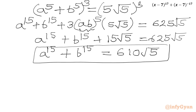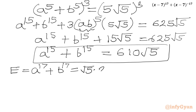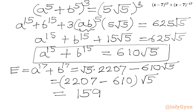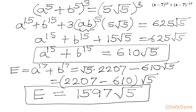Now our calculation is straightforward. E = A¹⁷ + B¹⁷ = (A + B)(A¹⁶ + B¹⁶) - AB(A¹⁵ + B¹⁵) = √5 · 2207 - 1 · 610√5 = (2207 - 610)√5 = 1597√5. So for the positive x case, the answer is 1597√5.